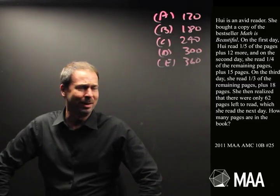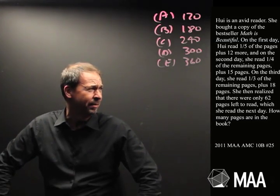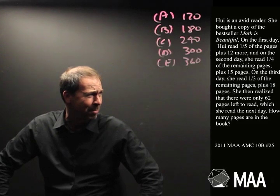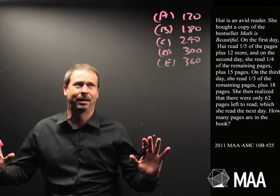What's going to go on here? Well, I didn't really take in the instructions. On day one, she read 1 fifth of the pages plus 12 more. Then day two, she read 1 quarter of the remaining plus 15 more. And another fraction plus 18 more. And there were 62 left. That seems complicated.